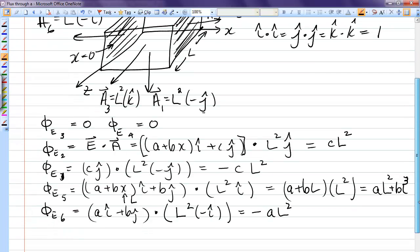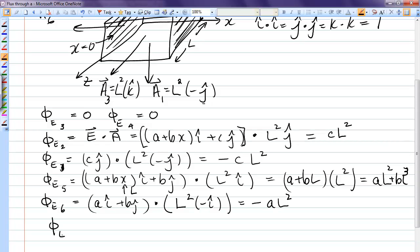Now when you add them all together, that's zero plus zero plus zero plus C L squared minus C L squared plus A L squared plus B L cubed minus A L squared. And all we're left with is the B L cubed. And that is the final answer.